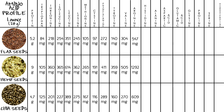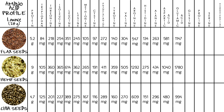For arginine: flax seeds 547 mg, hemp seeds 1292 mg, chia seeds 609 mg. For histidine: flax seeds 134 mg, hemp seeds 275 mg, chia seeds 151 mg. For alanine: flax seeds 263 mg, hemp seeds 434 mg, chia seeds 296 mg. For aspartic acid: flax seeds 581 mg, hemp seeds 1040 mg, chia seeds 480 mg. For glutamic acid: flax seeds 1147 mg, hemp seeds 1780 mg, chia seeds 994 mg. For glycine: flax seeds 354 mg, hemp seeds 458 mg, chia seeds 268 mg. For proline: flax seeds 229 mg, hemp seeds 454 mg, chia seeds 220 mg. For serine: flax seeds 275 mg, hemp seeds 486 mg, chia seeds 298 mg.